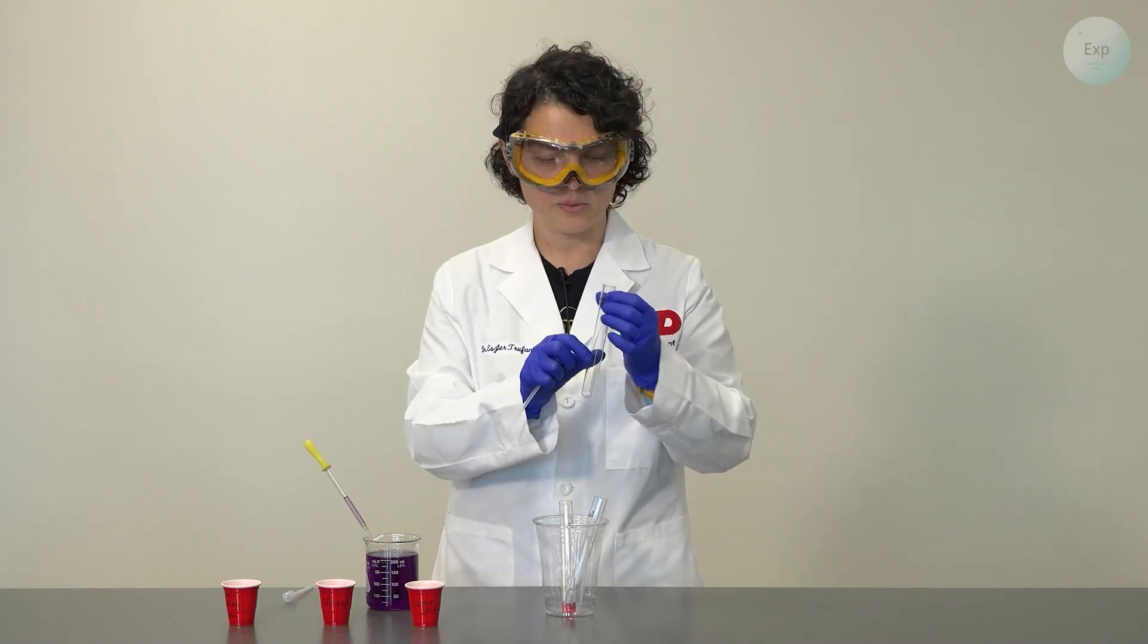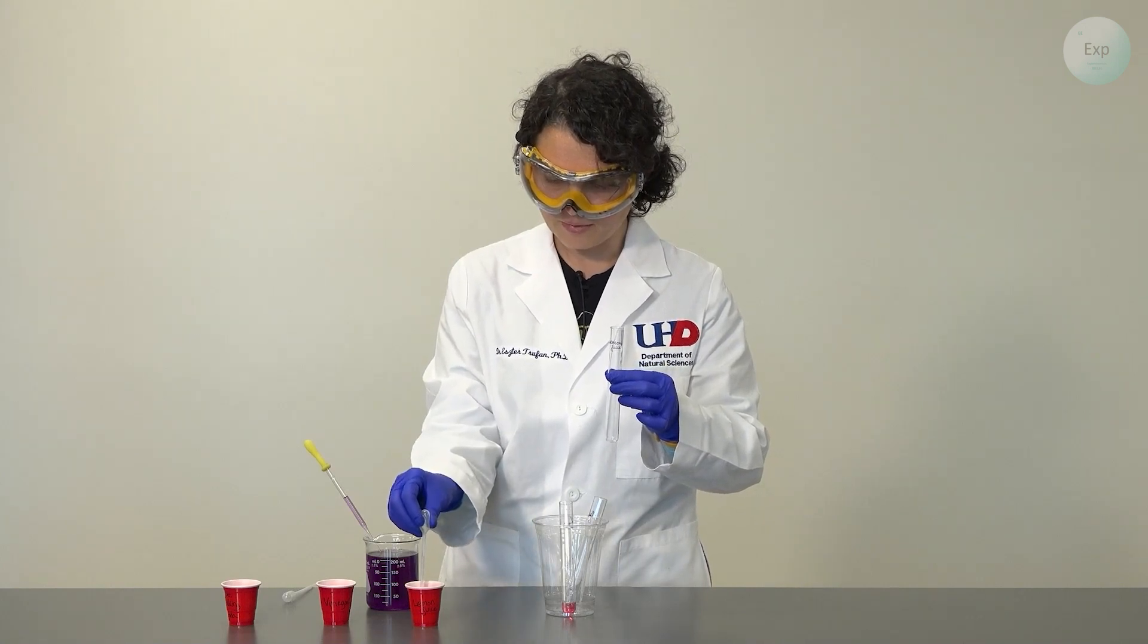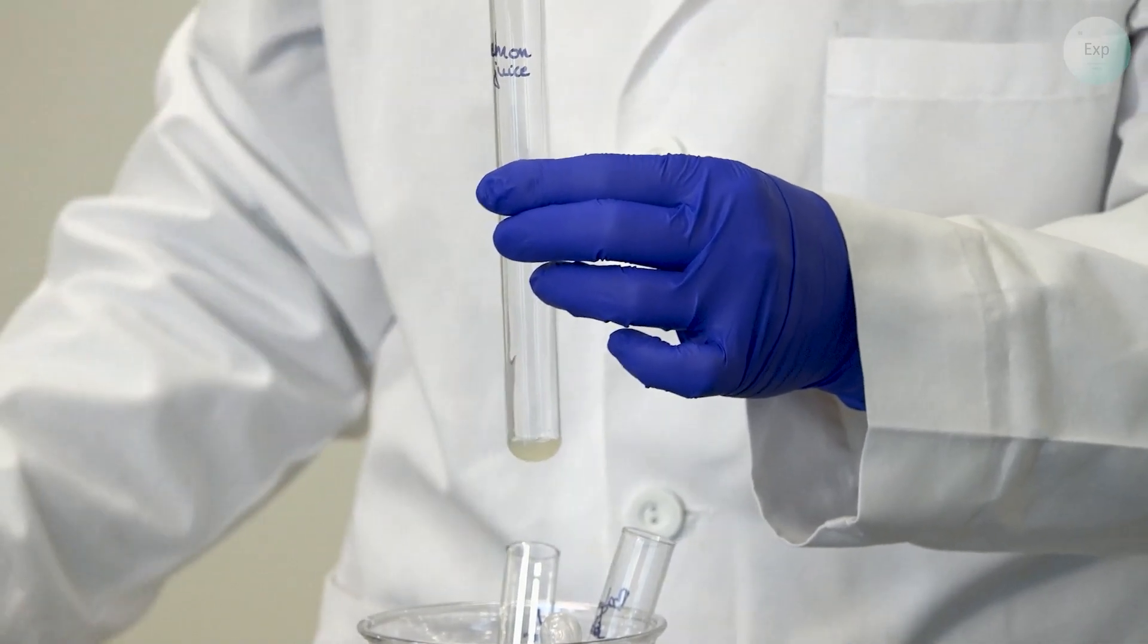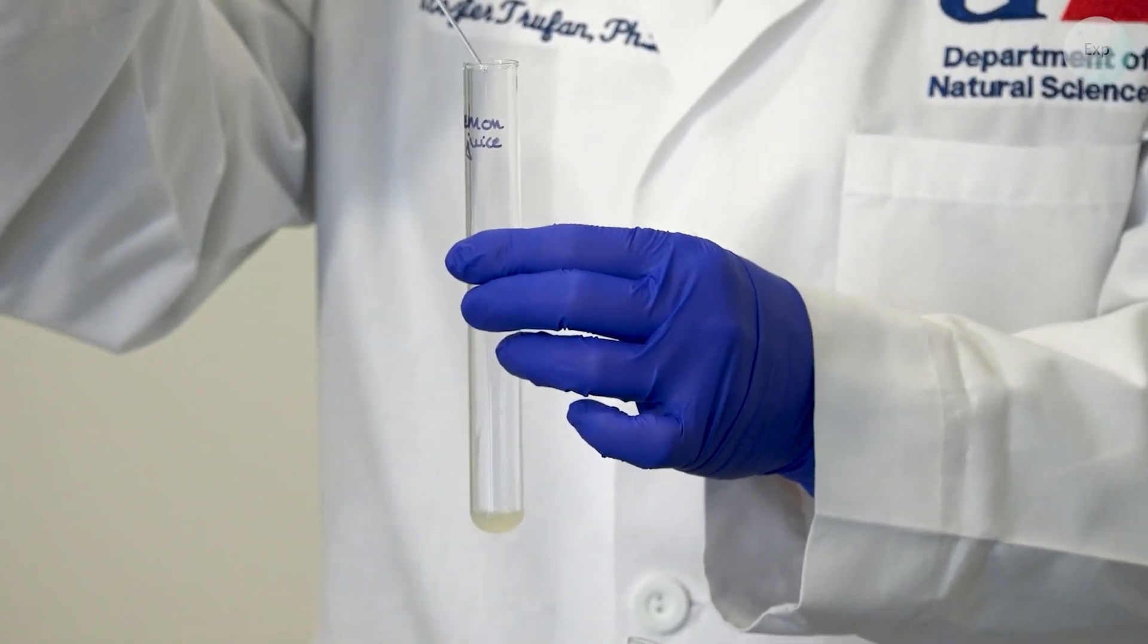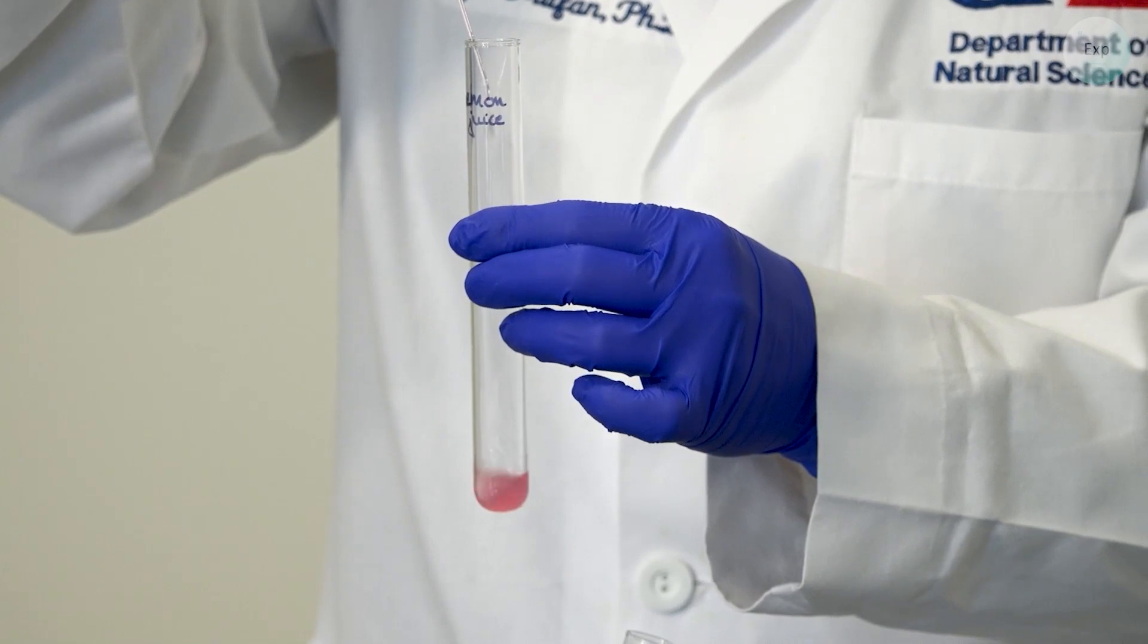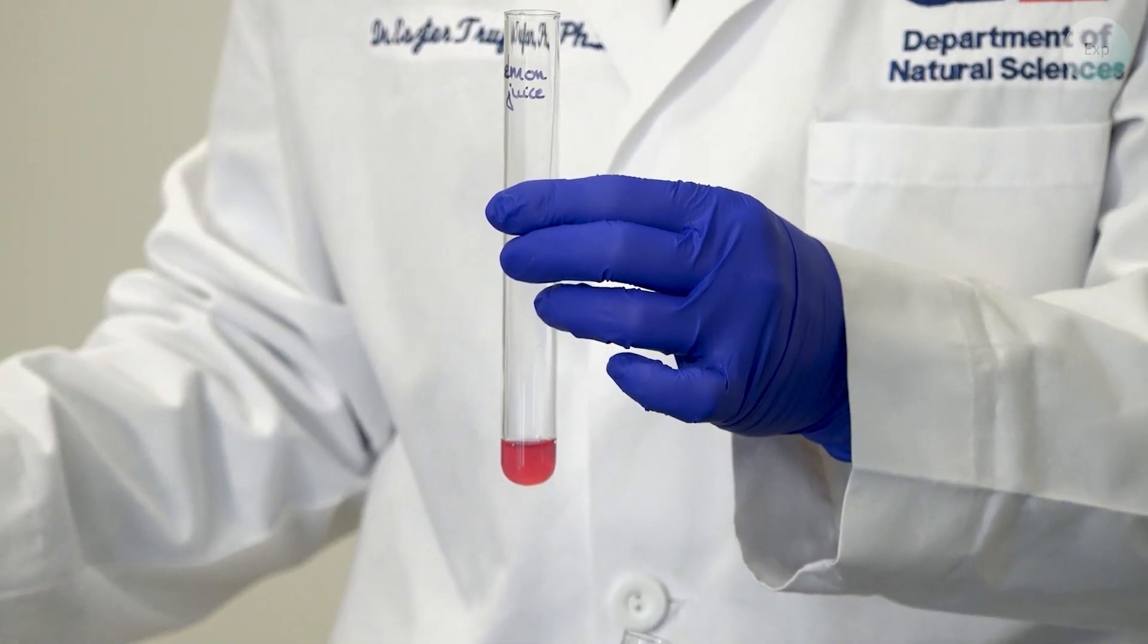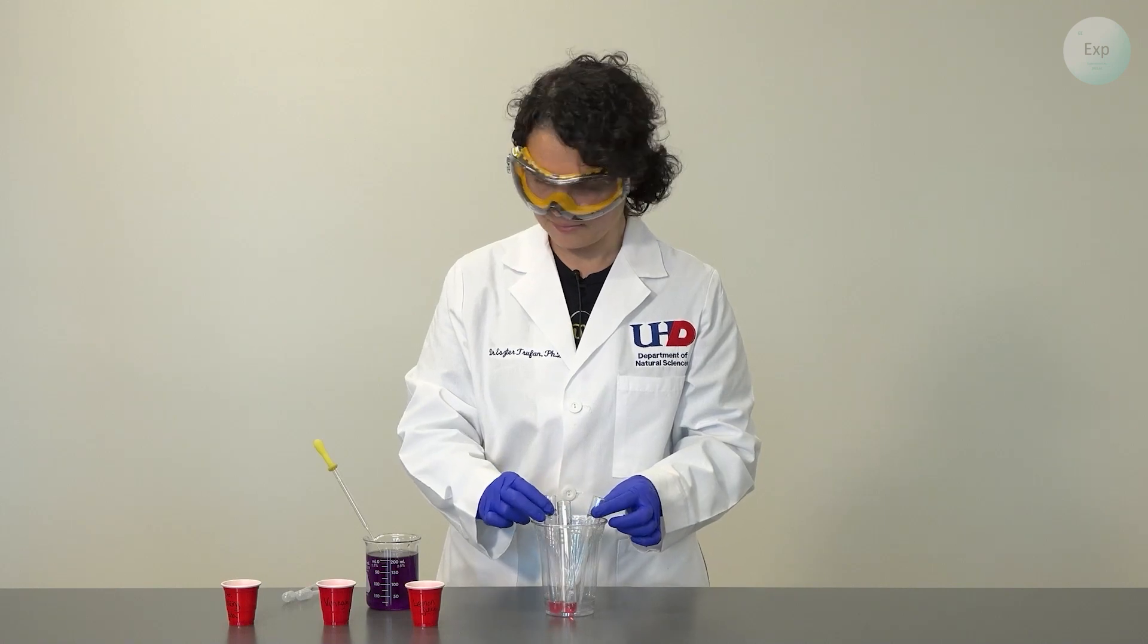Next I am going to look at my lemon juice. I will take a clean pipette, draw up some lemon juice and transfer it into the test tube. And then transfer some of the indicator solution in there. And I can see that there has been a color change again and this time it went towards a pink color.